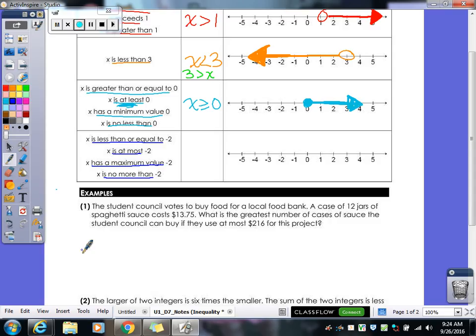All right, so here's our words for less than or equal to. So, is less than or equal to, that one's pretty easy. Is at most, has a maximum value, or is no more than. They're not trying to mess you up. So again, the or equal to means it's a closed circle, and it would be shaded to the left.